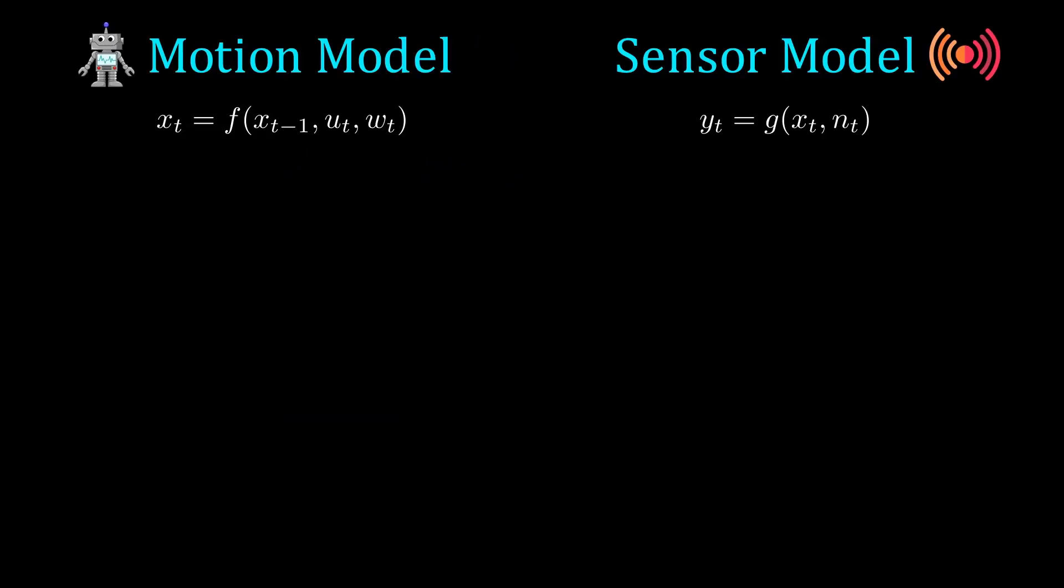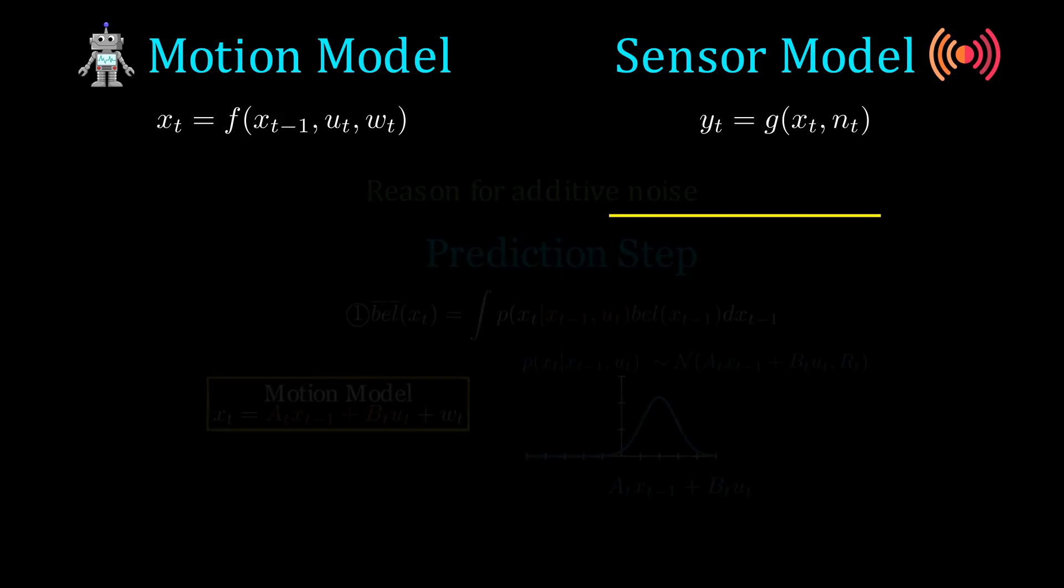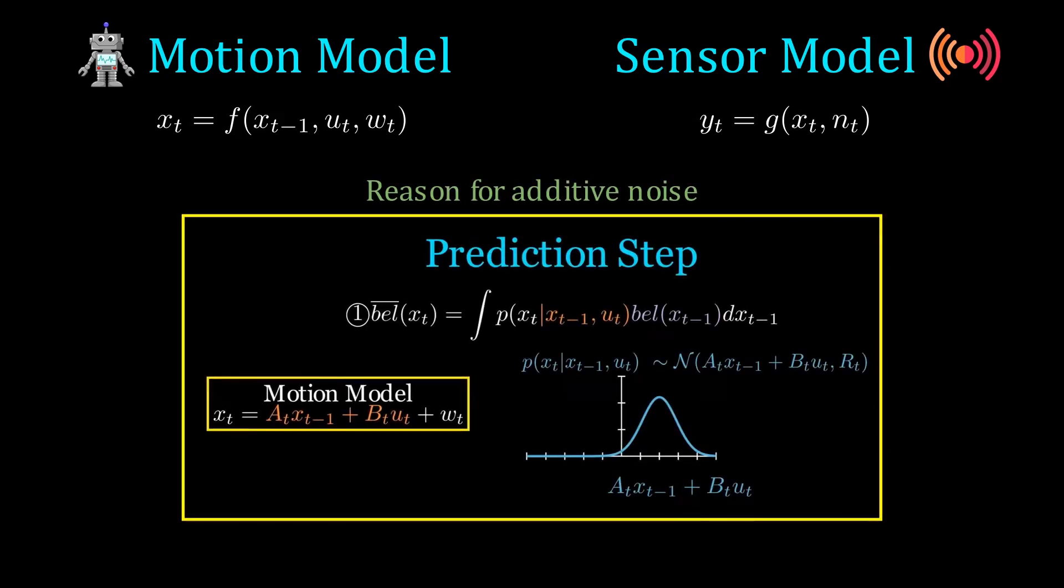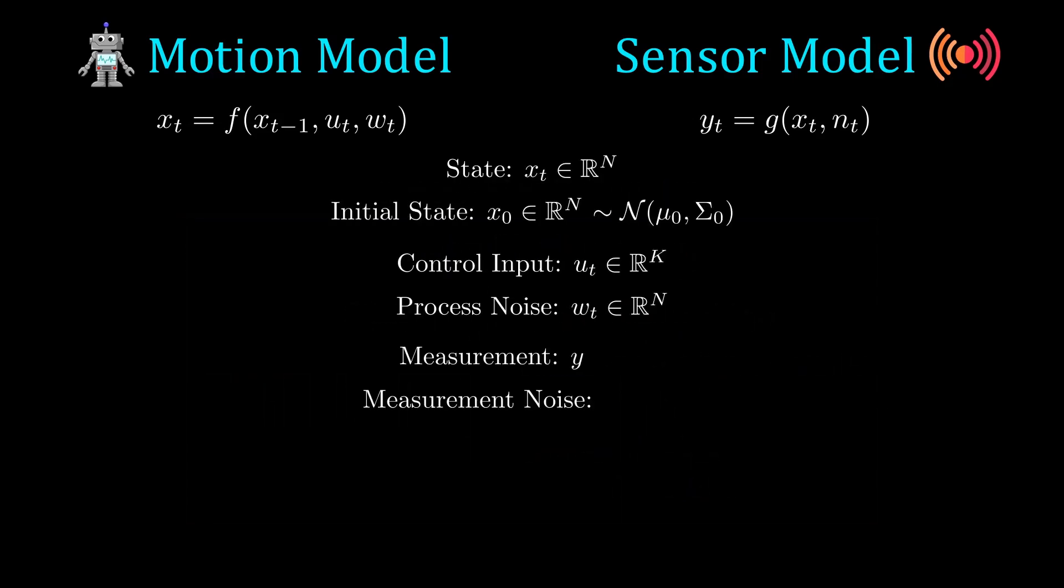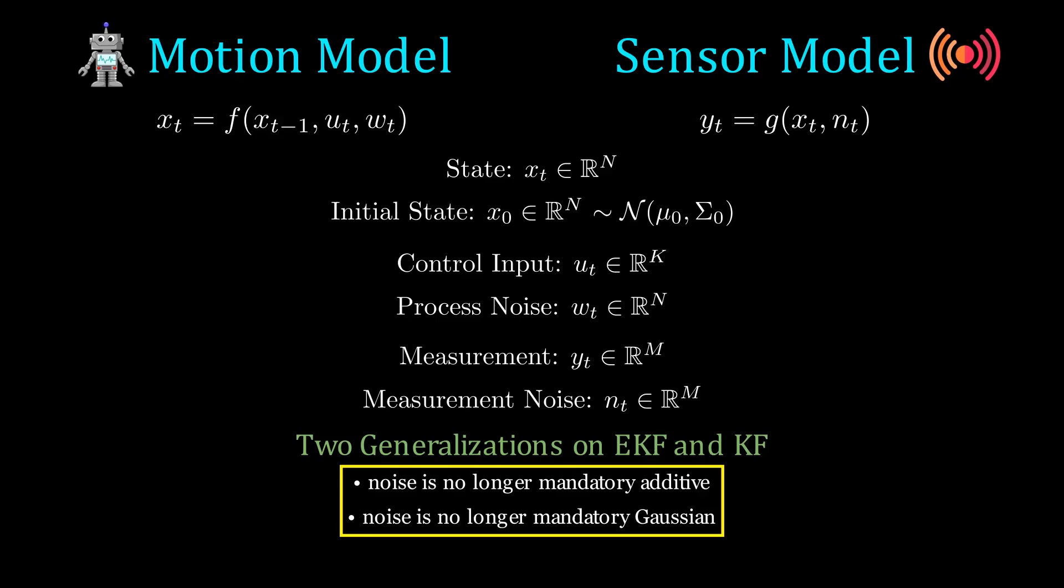In this model setup, we no longer require additive noise in our motion and sensor model functions. The reason we needed it before is because of the analytical derivation of the Bayes filter equations. In particular, recall when employing the motion model, we needed P of xt given xt-1 and ut to remain a Gaussian distribution. In addition, we don't even need the Gaussian noise assumption either. Other than that, the notation is the same as before.